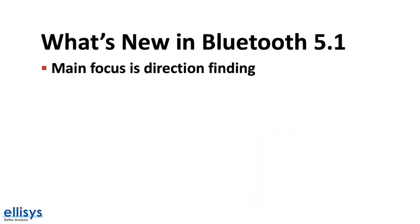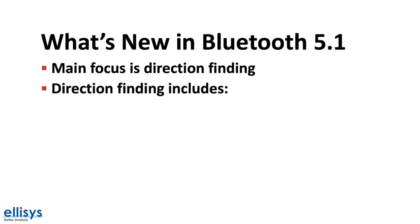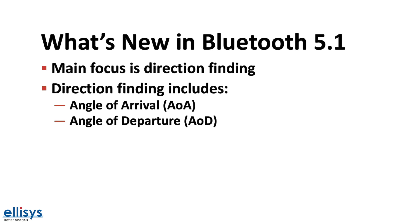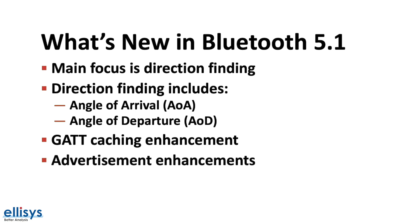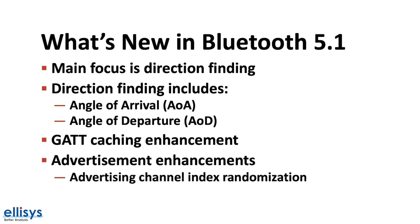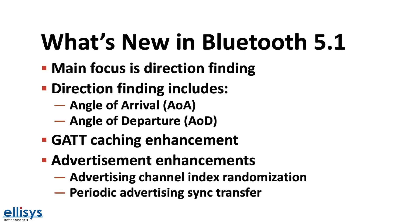The main focus of Bluetooth version 5.1 is a feature called the direction finding feature. Direction finding includes the introduction of angle of arrival and angle of departure calculations. Other new features include GAP caching enhancements and advertising enhancements, including advertising channel index randomization and periodic advertising sync transfer.